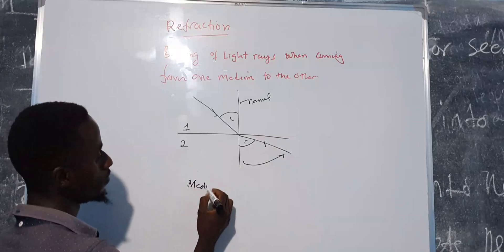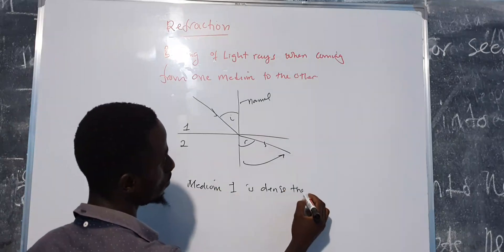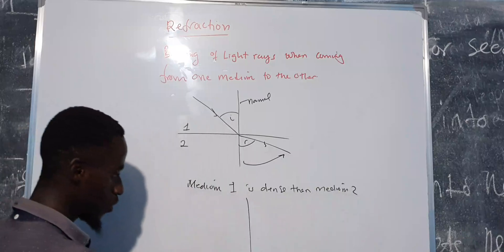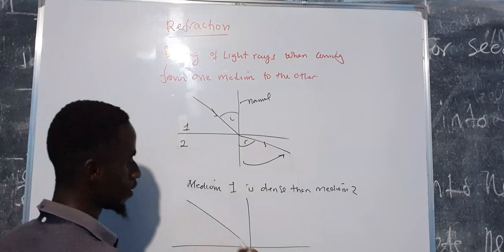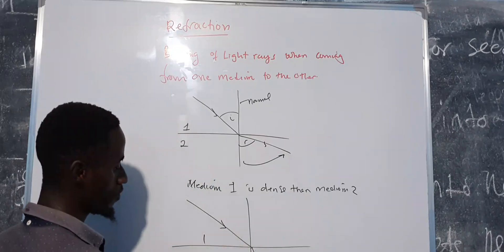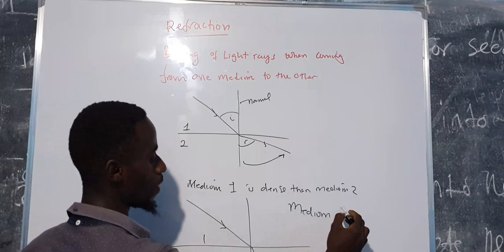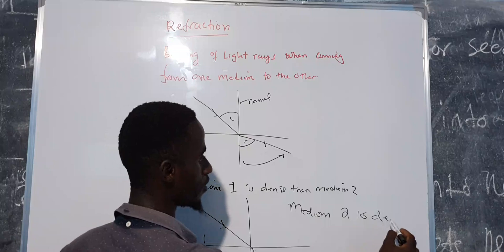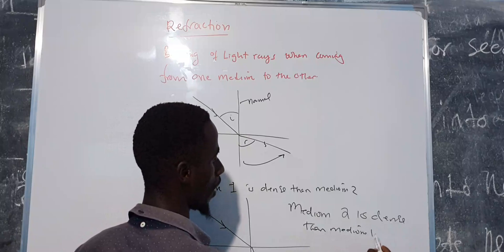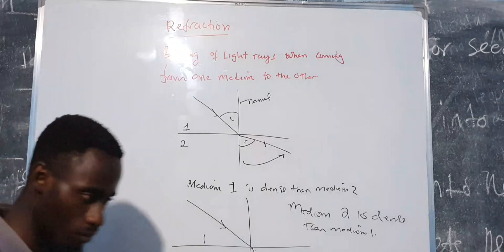You see medium one, this is medium one, medium two. What does this tell you? This tells you that medium one is denser than medium two. When you have something like this, then you have something like this, medium one, medium two. This will tell you that medium two is denser than medium one.